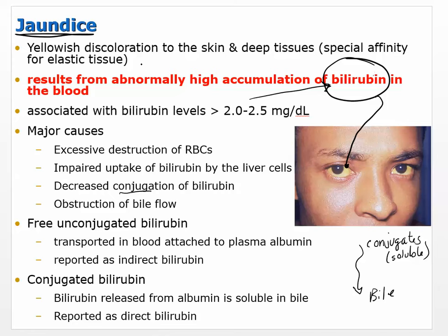Free unconjugated bilirubin transported in blood attached to plasma albumin is reported as indirect bilirubin. Conjugated bilirubin is released from albumin, is soluble, and is excreted into bile. The conjugated form is the one turned into the soluble form and then released in the bile.